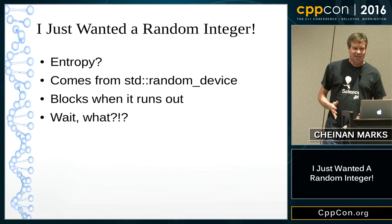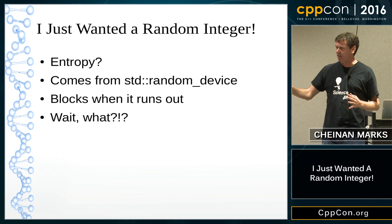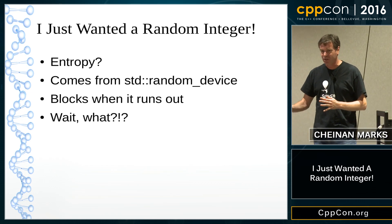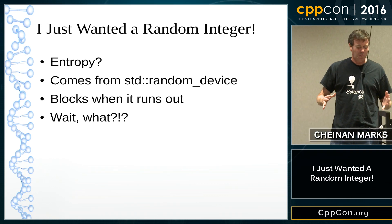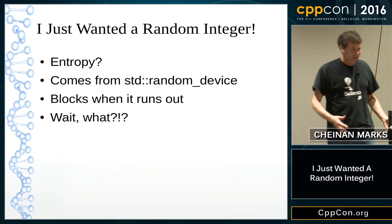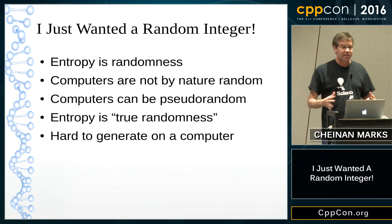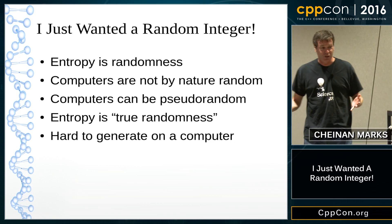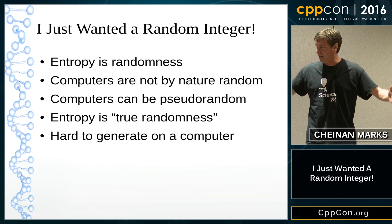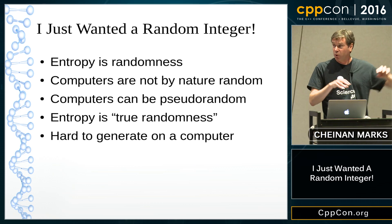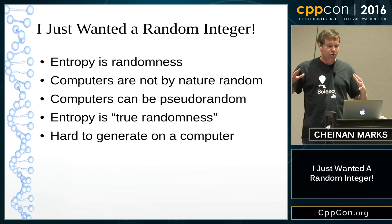So entropy — what is it? It comes from std::random_device. It might block when it runs out. What does it mean to run out of entropy? Entropy is randomness. I studied statistical thermodynamics and knew that entropy is the number of states that an ensemble can take — that is essentially randomness. If something is very well organized, there are few ways it can be organized, but if something is random, there are lots of ways it can be random. So entropy is randomness.